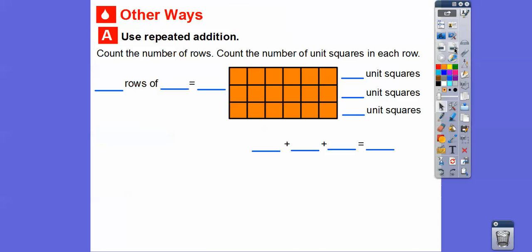Easy, huh? All right, so count the number of rows. Here's another way. So we're going to go ahead and count the number of unit squares in each row. So there are three rows right here: one row, two rows, three rows. And then there are 1, 2, 3, 4, 5, 6—six unit squares in each row right there. So that gives us three units of six.